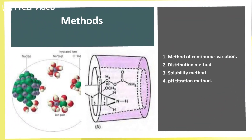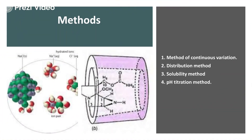There are four methods used for the determination of complex formation. The first is known as the Method of Continuous Variation. Second is the Distribution Method. Third is the Solubility Method. And fourth is the pH Titration Method.